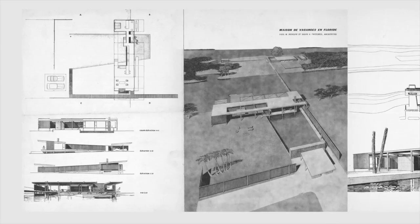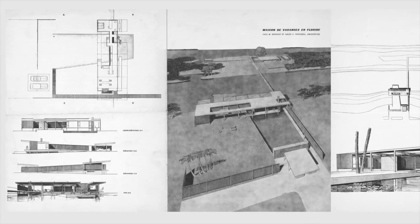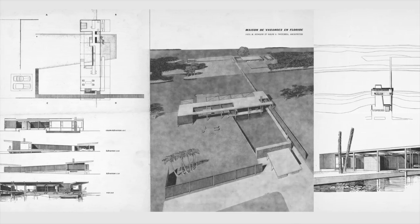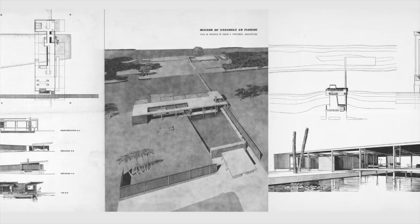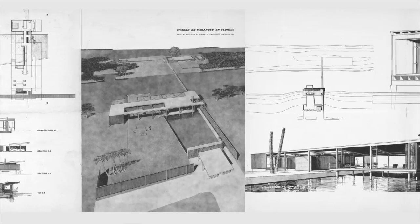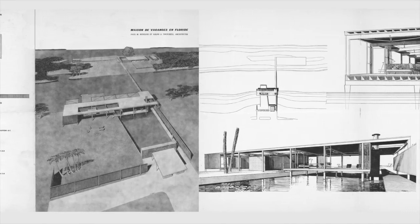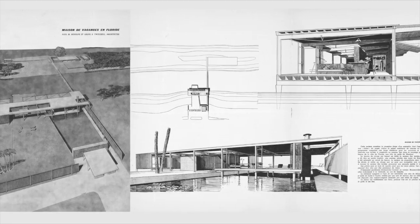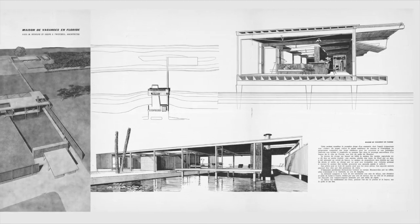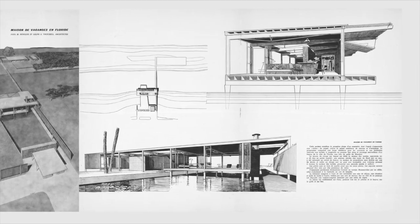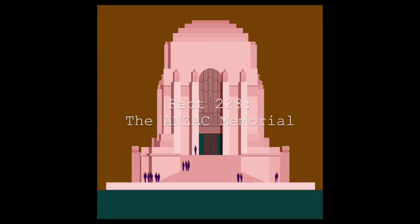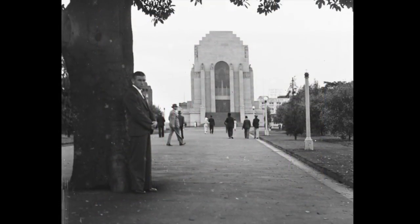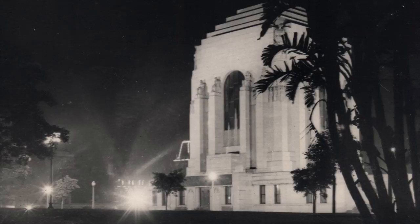In architecture school, students present their building projects. These presentation drawings typically include the site plan, building plan, elevations, sections, and perspectives — much like these Paul Rudolph images from a book.